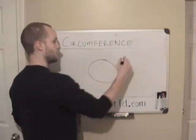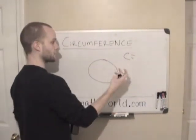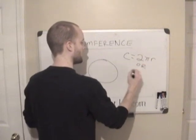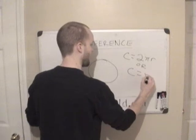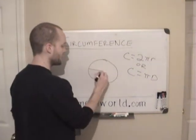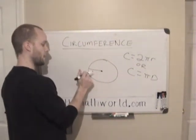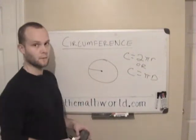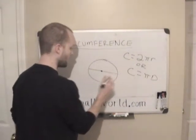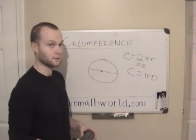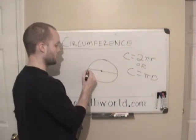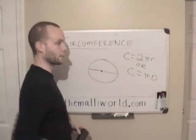The formula to find this is C equals 2πr, or you may see it as π times d. R is the radius, the line from the outside to the very middle of the circle. D is the diameter, a line from one side of the circle to the other. These are interchangeable because 2 times r is the diameter, so two radiuses added together are the diameter.